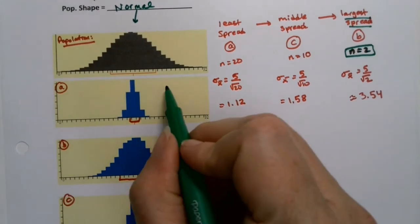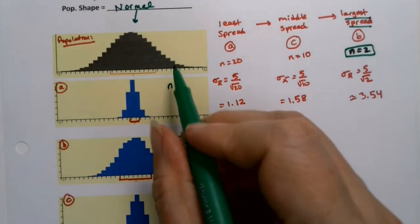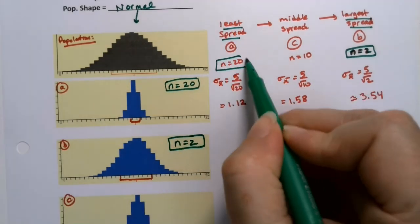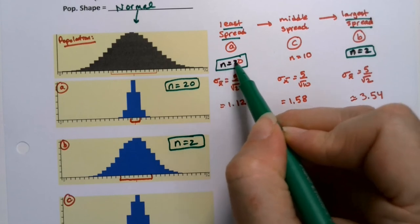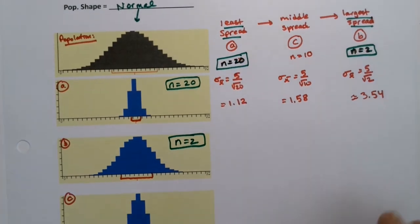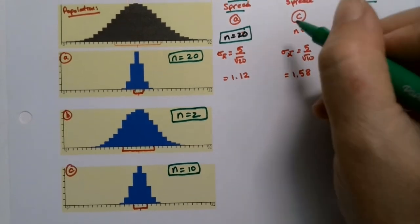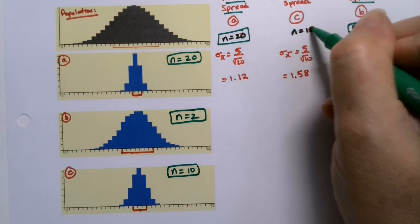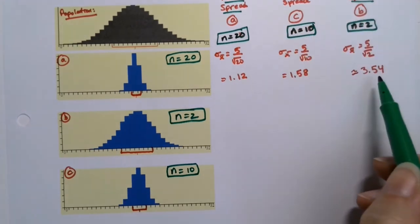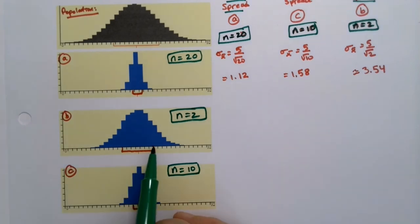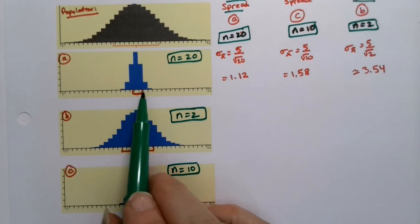This one's the most packed in, the most compact. So this is n equals 20 right here because it has the least spread. And the middle amount of spread, which we could have guessed because it's the middle number, is n equals 10. And you can see the numbers are backing us up. 3.54 is much larger than 1.12. And you can see it right here. It's a give or take of about 3.5, whereas this one's give or take of about 1.